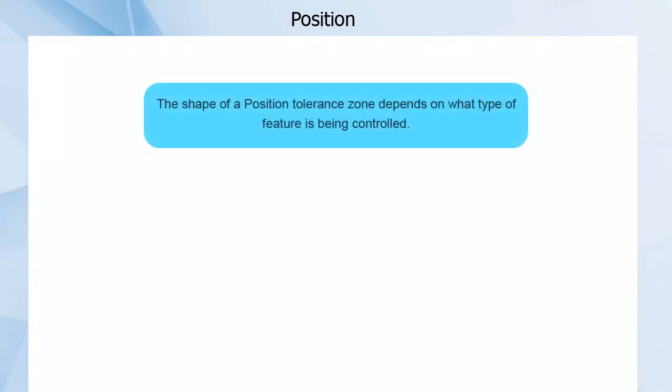The shape of the tolerance zone depends on what is being controlled. Position controls can be used for the location of an axis, or for the location of non-diametric features of size, such as slots, tabs, and bosses.